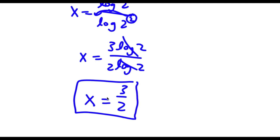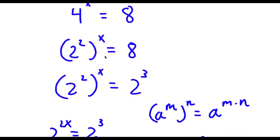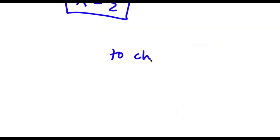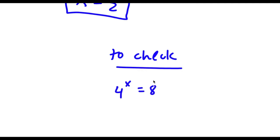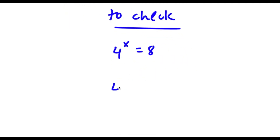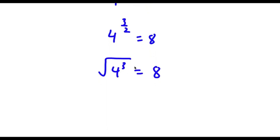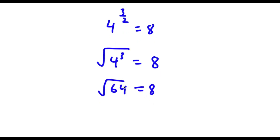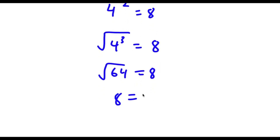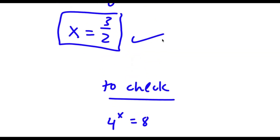So those are two methods of solving this problem. To check: 4 to the power of 3 over 2 equals 8. This is the same as the square root of 4 to the power of 3. 4 to the power of 3 is 64, and the square root of 64 is 8. So 8 equals 8, which confirms my solution is correct.